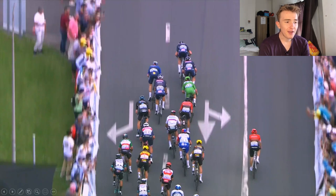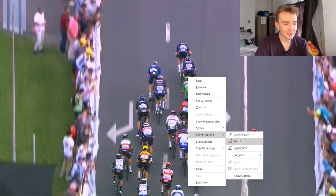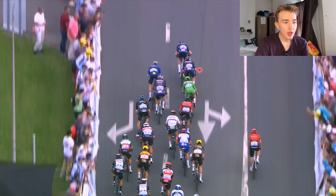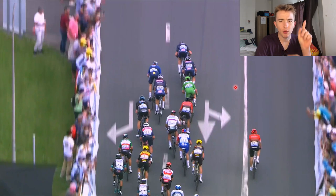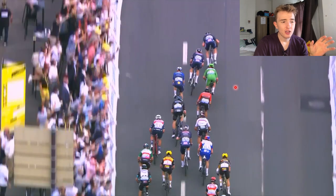We can see here that Cavendish is in the green. I'll put the laser pointer on just to make it a little bit easier to see. Luckily, there's actually a line — it does deviate, but when we look at it from the point I'm going to analyse, it is perfectly straight, so it's very easy to see exactly what happens.